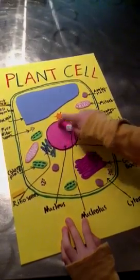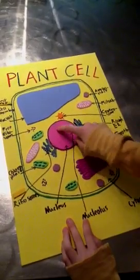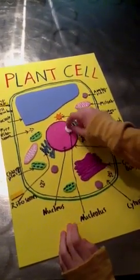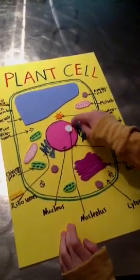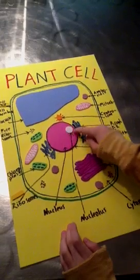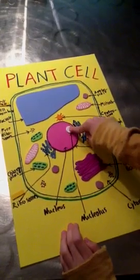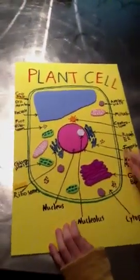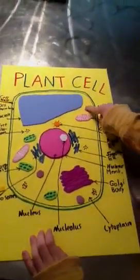This pink part is the nucleus. This little white circle is the nucleolus. That's the ameloplasts.